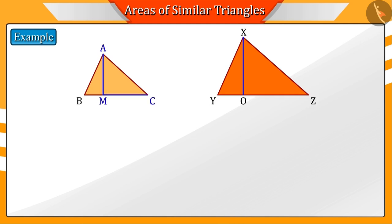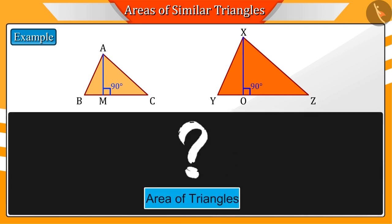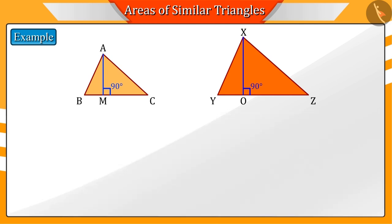Can you tell the measure of angles AMC and XOZ? Since AM and XO are the altitudes of the triangle, the angles AMC and XOZ will be 90 degrees. Now, can you find the area of these two triangles?